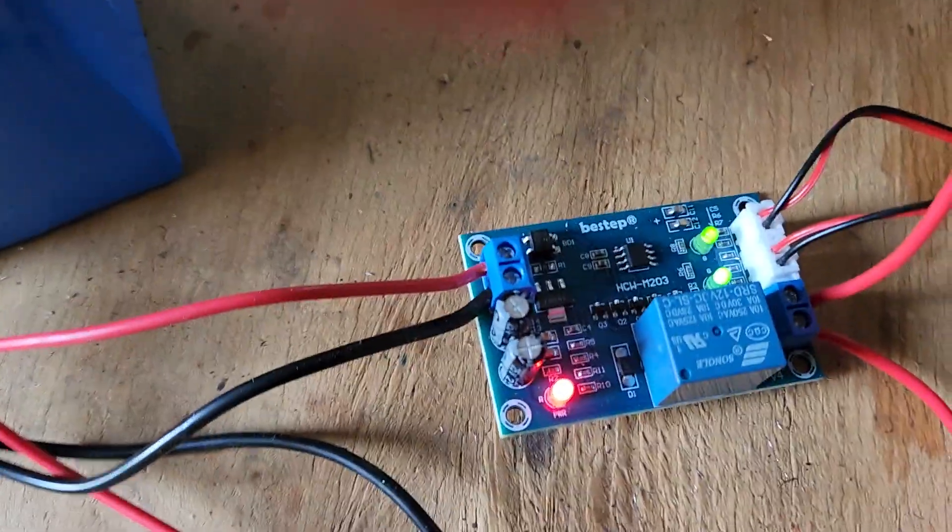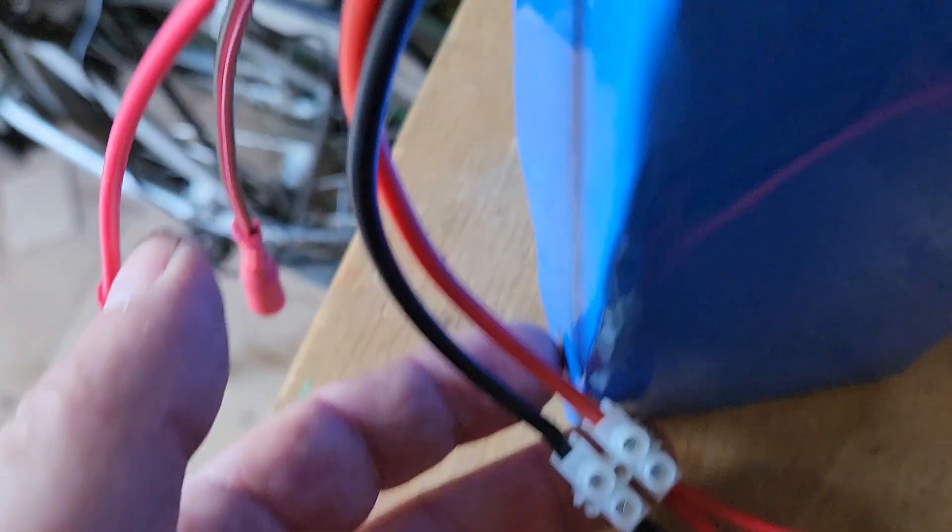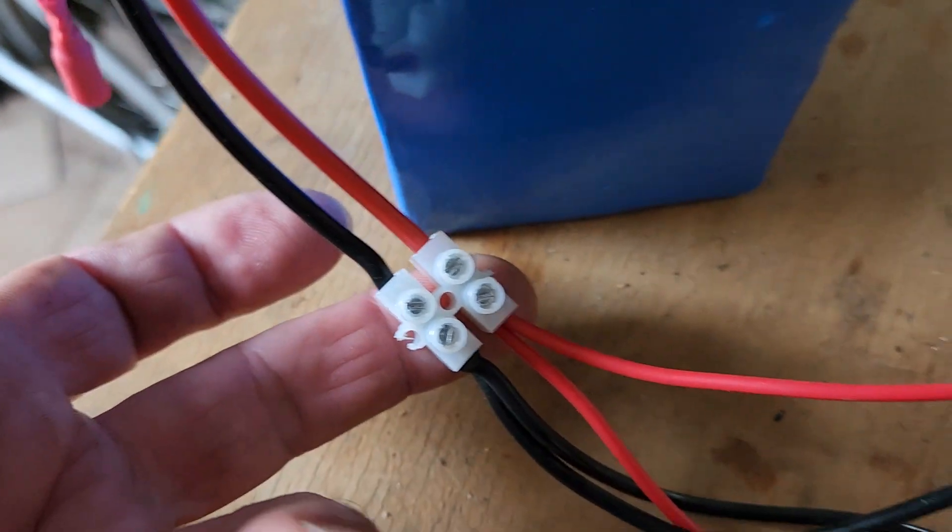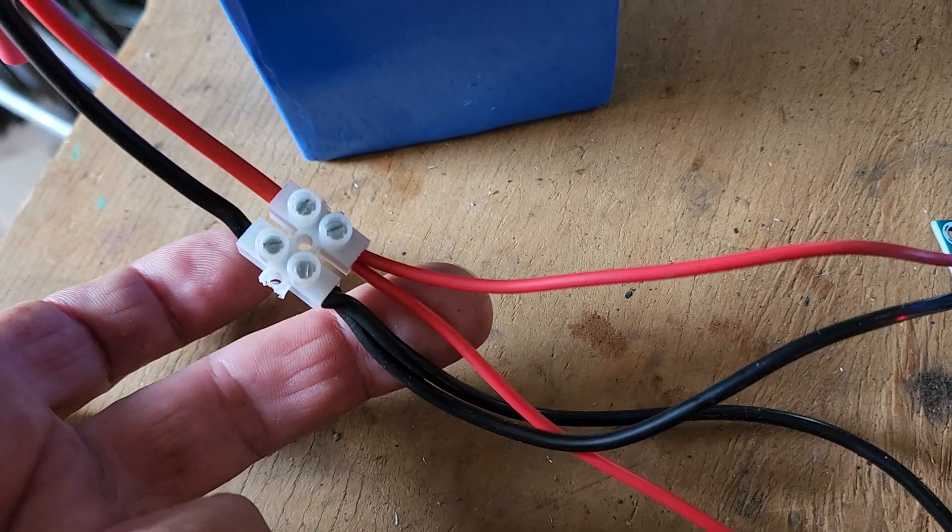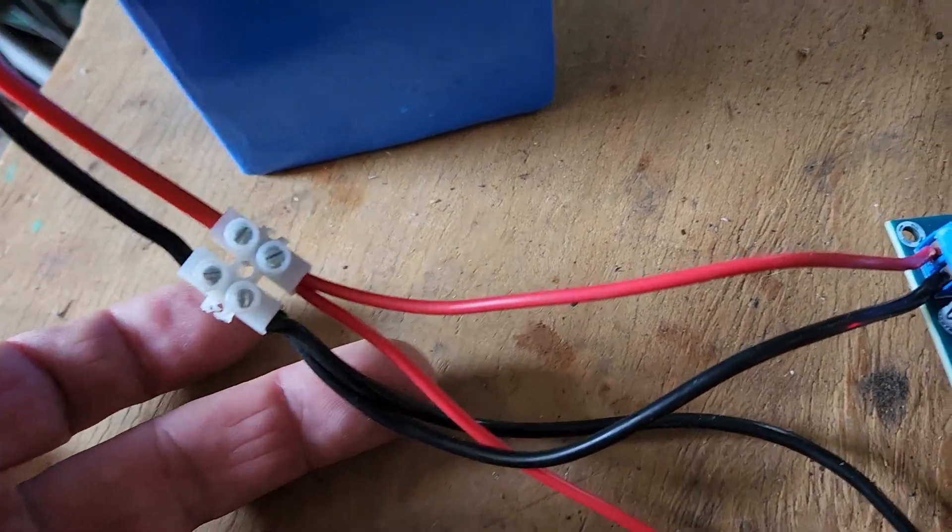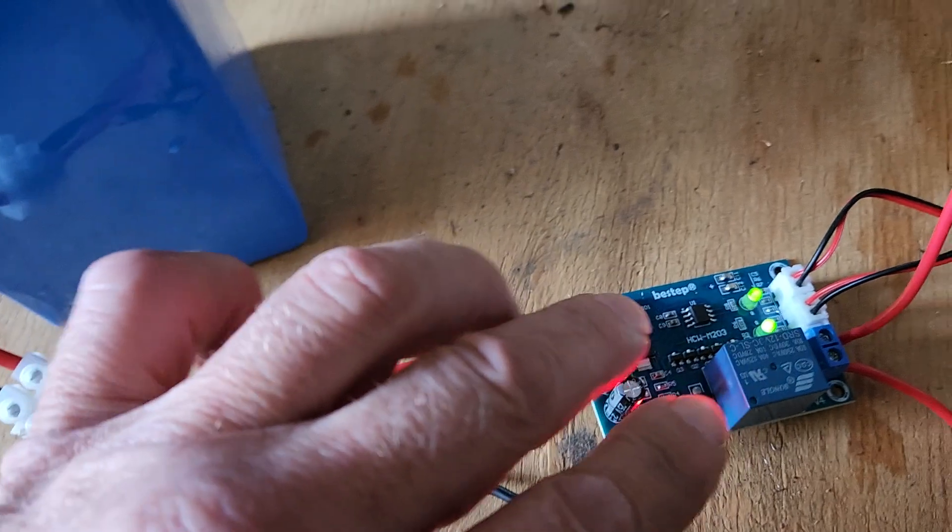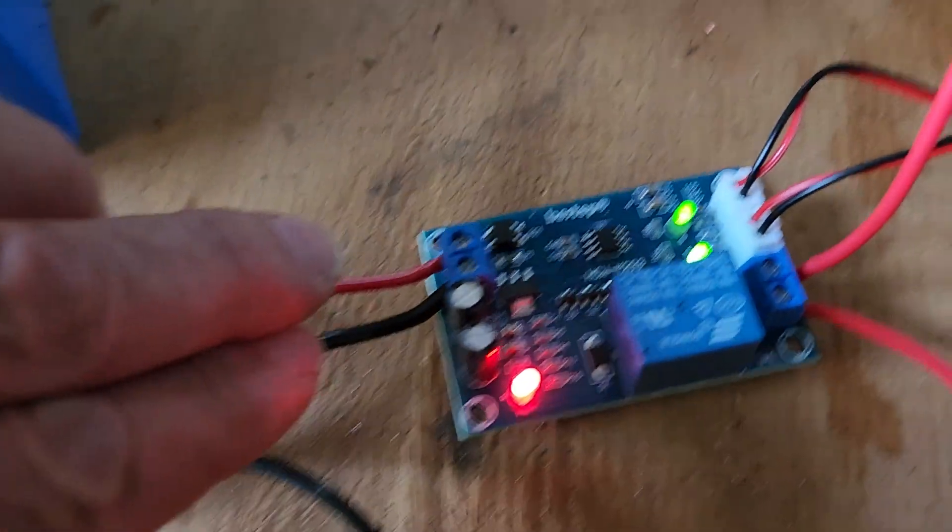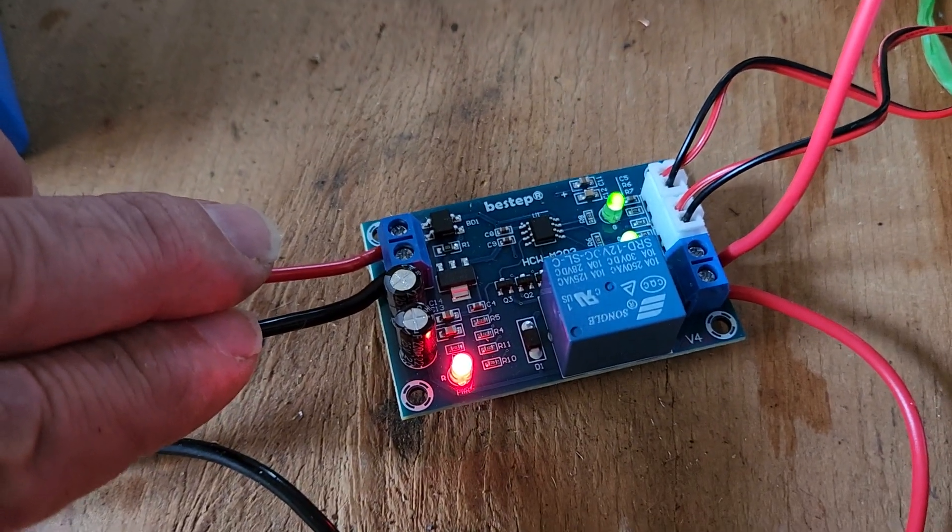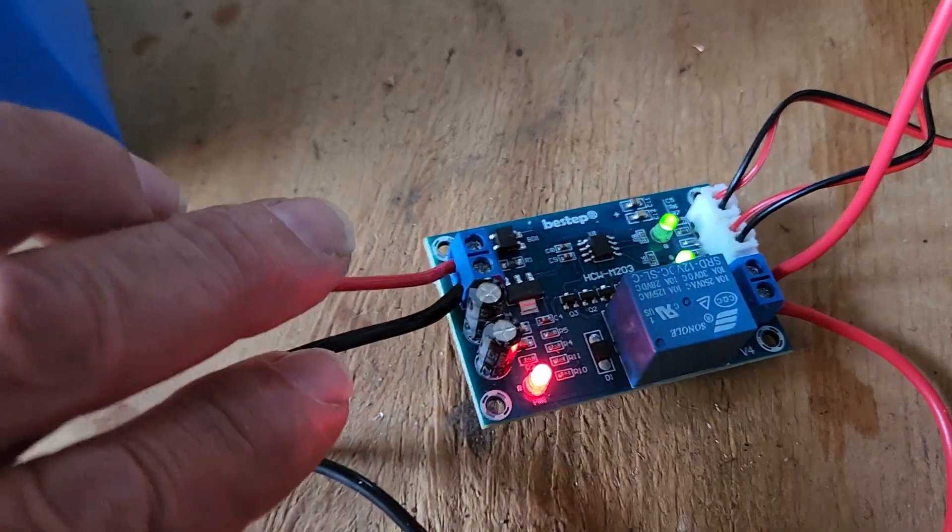The unit itself is connected to the battery. I've just split the positives and negatives—negative black, positive red—and I've got positive and negative connected to the module here to run the module.